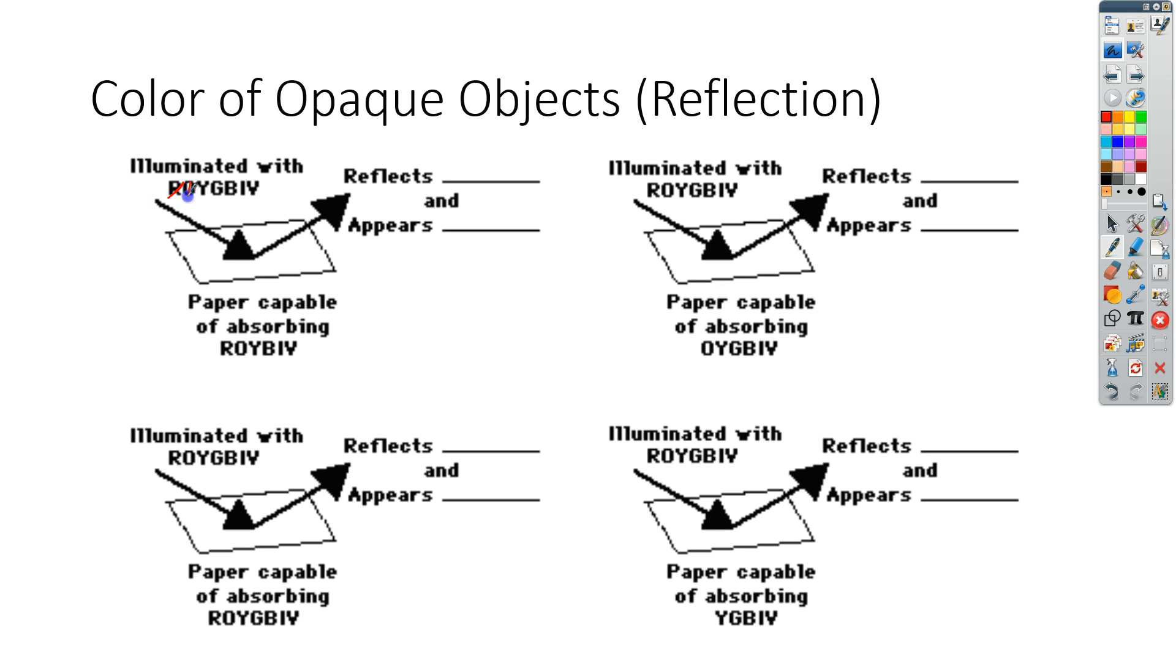We know that it absorbs red, orange, yellow, so we can get rid of the yellow, the blue, the indigo, and the violet. And what you're left with is green. So this one reflects green, and it appears green.